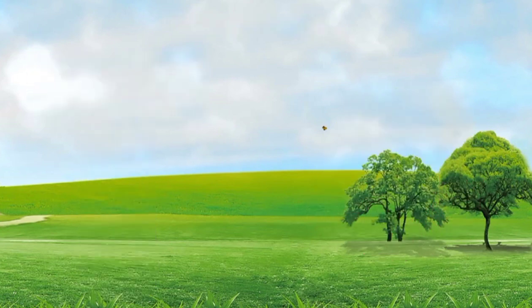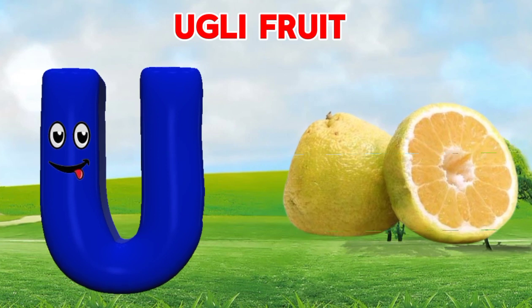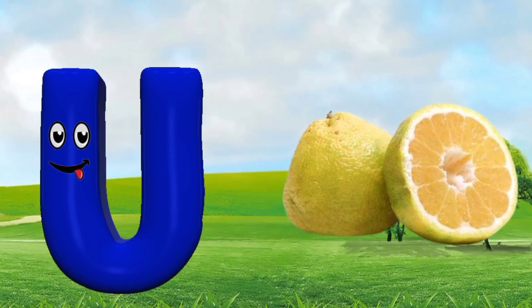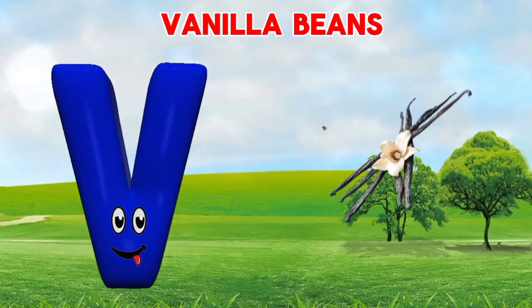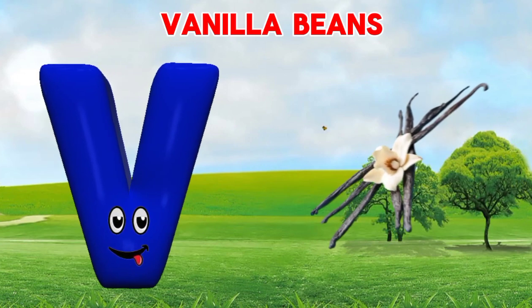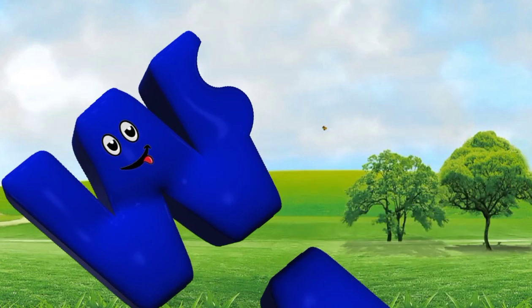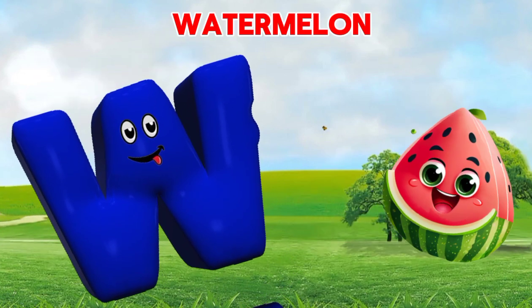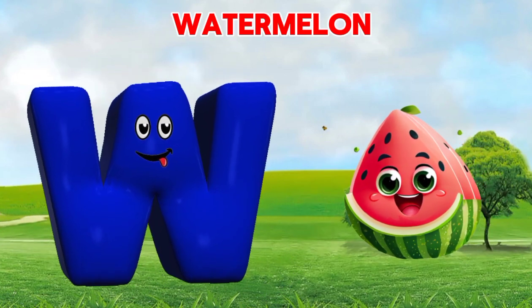U is for ugly fruit. U, u, ugly fruit. V is for vanilla beans. V, v, vanilla beans. W is for watermelon. W, w, watermelon.